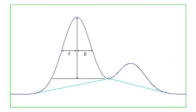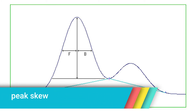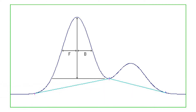Even more than peak width measurements, peak shape measurements become tricky when the peak shares a common baseline with the adjacent peaks. Ideally, chromatographic peaks are purely Gaussian and completely symmetrical in shape; in practice they are neither. The peak skew provides a measure of the asymmetry of the peak and is defined as the ratio of the back width to the front width. Even severely asymmetric peaks are symmetric near the peak top, so skew is measured near the baseline, typically at five percent or ten percent height. Skew equals B divided by F.